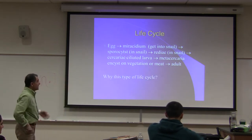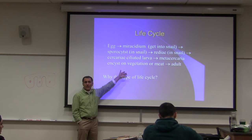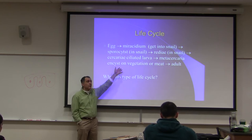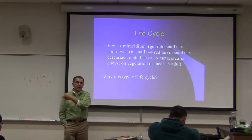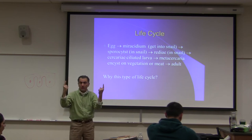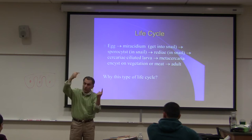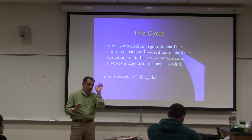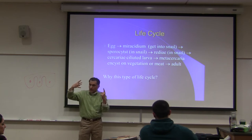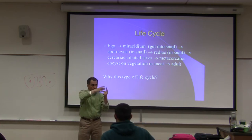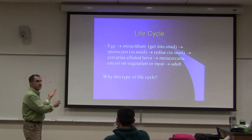Why does one egg become so many larvae eventually? Because these guys have to go through two, sometimes three different hosts. If only one egg becomes one adult and they have to go through different hosts, the odds of the life cycle continuing would be almost zero - they would go extinct. But one egg becomes many larvae, and those larvae hopefully find the right host, and they have been alive for billions of years.